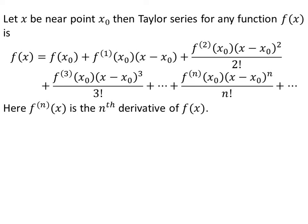Let x0 be any reference point near which we want to find the Taylor series of a function. Let x be any point near point x0. The Taylor series for a function f of x is given as the value of function f at point x0, plus first derivative of f at x0 times (x minus x0), plus second derivative of f at x0 times (x minus x0) squared upon factorial of 2, plus third derivative of f at x0 times (x minus x0) cubed upon factorial of 3, plus so on up to infinity.